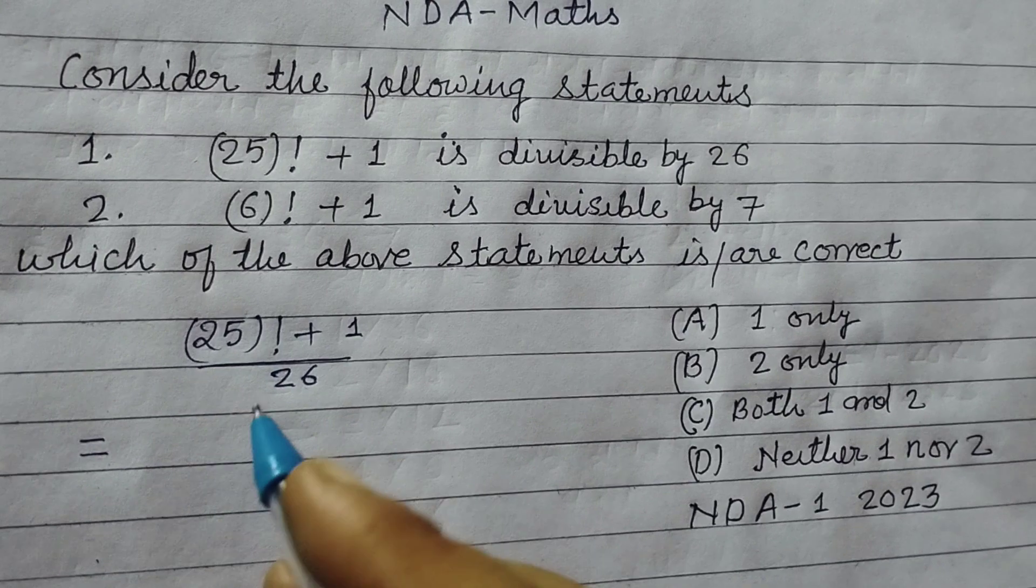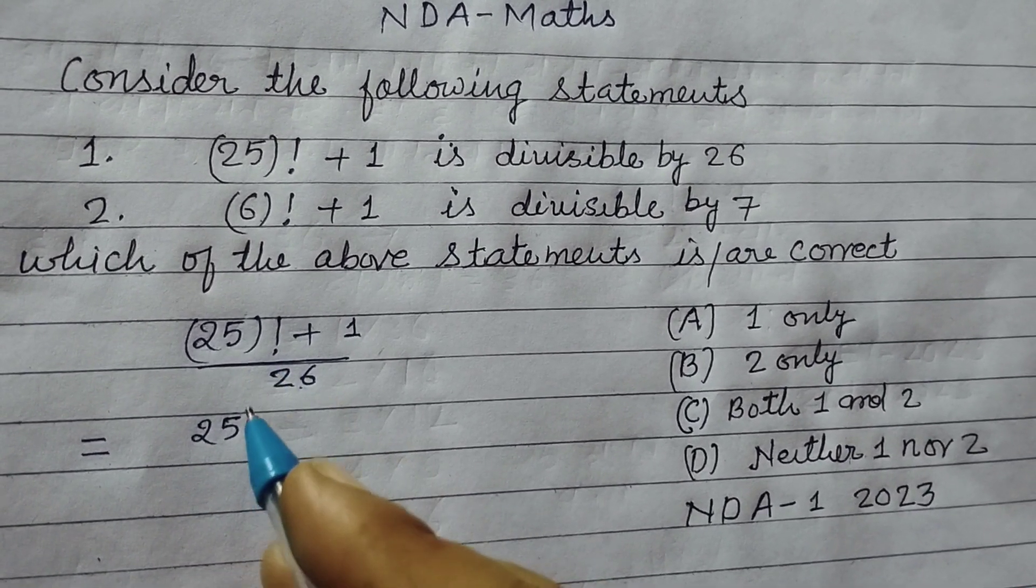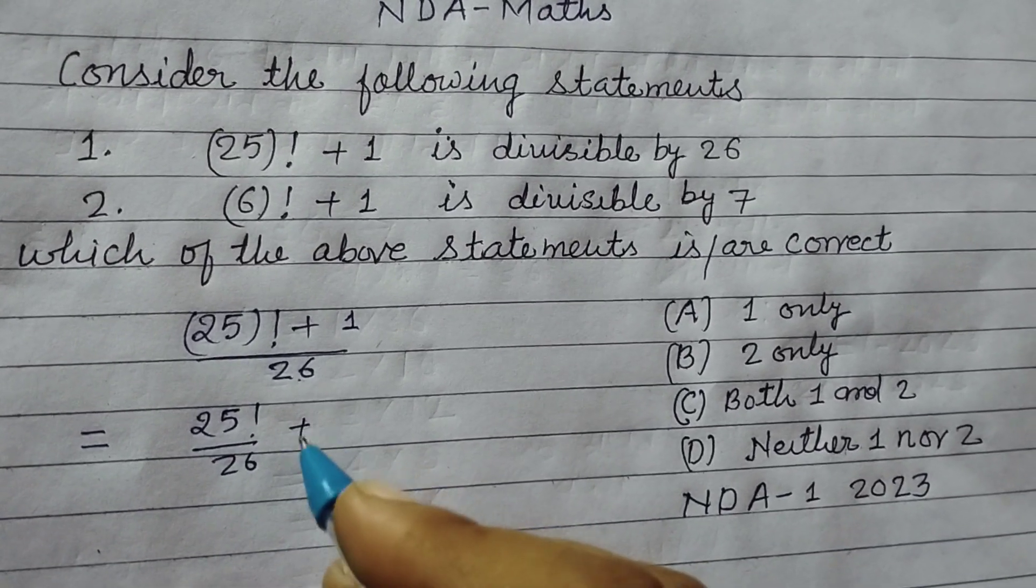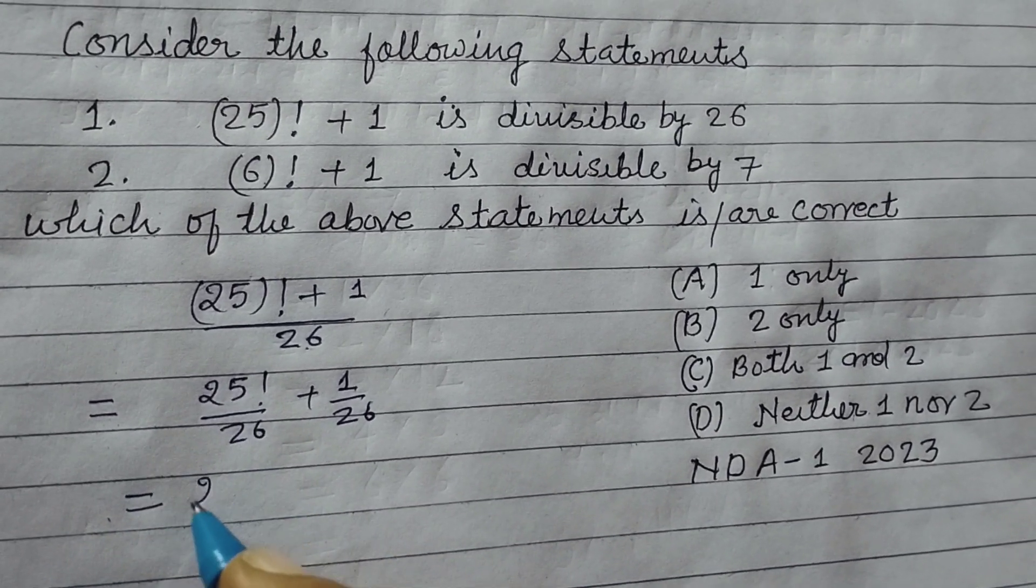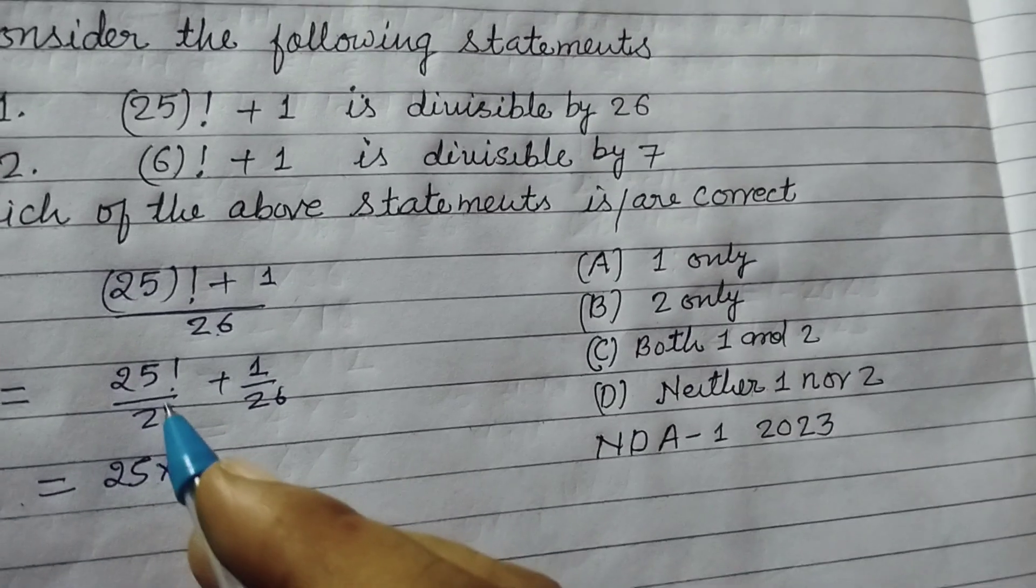So we individually divide 26 in factorial 25 upon 26 plus 1 upon 26. Student, here we take factorial 25, we open 25, 24, 23 and so on.